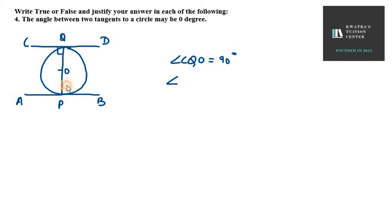Other angle, OPB will be 90 degree. Why it is 90 degree? Because it is forming the angle between radius and tangent.